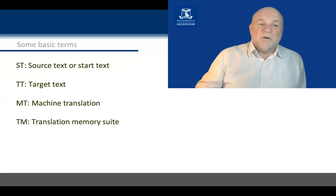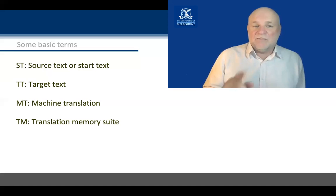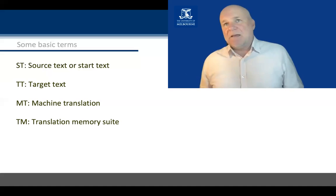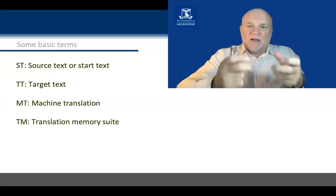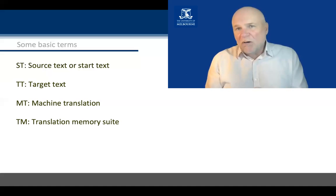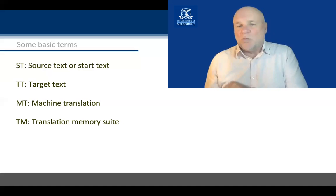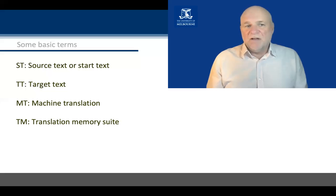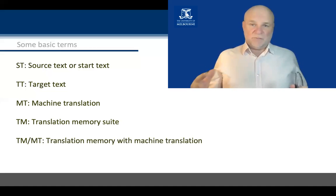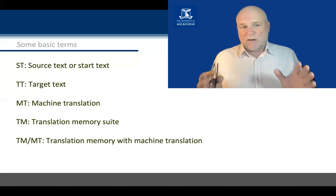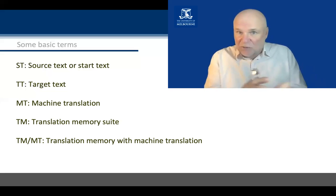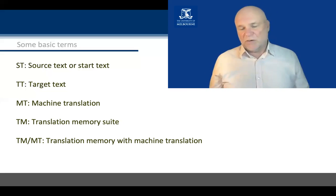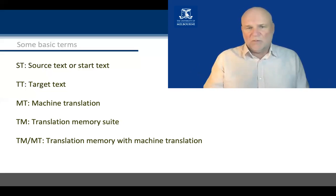Not to be confused with TMs. TMs are translation memory suites. A TM is a set of electronic tools that enables you to bring up your previous translation of a particular sentence, or your translation of sentences that are similar to the one you're translating. These days, those two technologies tend to come together. Most translation memory suites incorporate an MT feed — they have information coming in from machine translation. So the technologies we're using are really TM plus MT, just to put the two together.